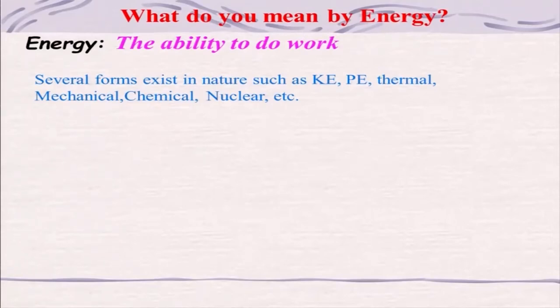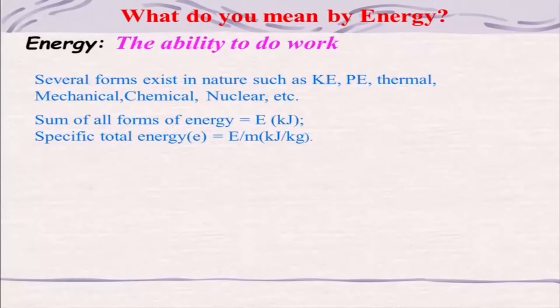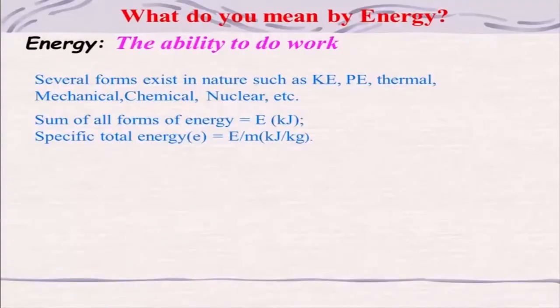This energy can be classified into various forms, but the sum of all forms of energy we can represent using the symbol E. The unit will be in kilojoules — it can be megajoules or simply joules, depending on the amount of energy you are dealing with.